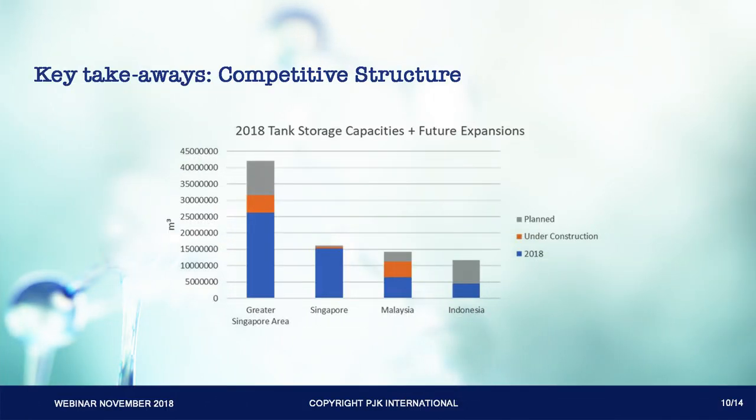Key takeaways — competitive structure. Over the last decade, the greatest terminal expansions were registered in Singapore. Turning towards the future, however, near-future tank terminal expansions in Singapore are only minor. Malaysia and Indonesia are expected to vastly increase their capacities in the near future, both potentially approaching Singapore in terms of total storage capacity.